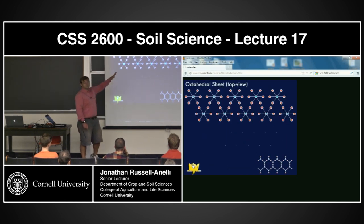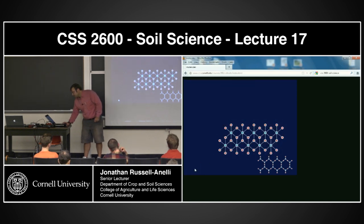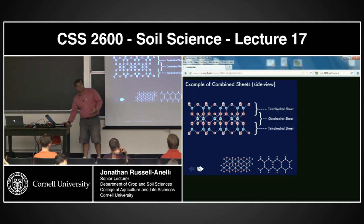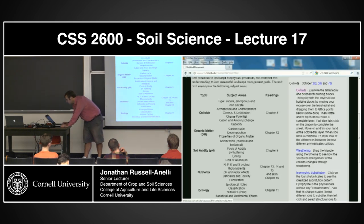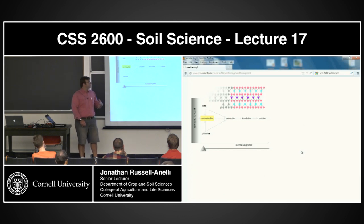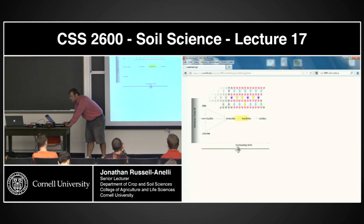Do the same thing with this and you can walk your way through these things. You put them together so you can see how these things are assembled. The other thing I'd like you guys to do — we have this weathering tool. This basically shows the sequence of weathering of this material. You start with vermiculite, and as you move the slider bar down, you're looking at increasing weathering.